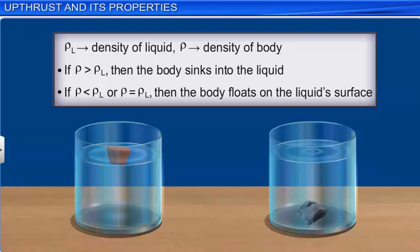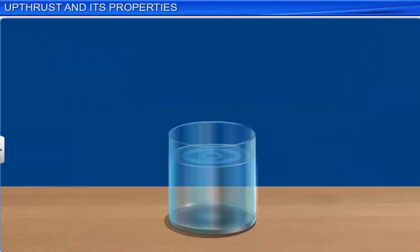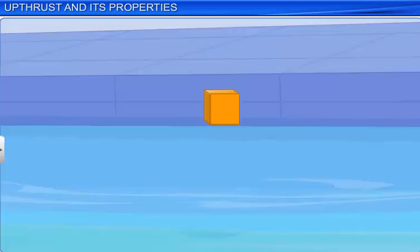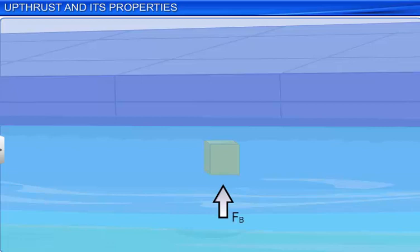Why do fluids exert an upthrust? When the pressure acting at a certain point in the liquid from all directions is equal, it causes an upthrust. When a block is immersed in a liquid, pressure acts on the lower part of the block, which is greater than that acting on the upper part. Thus, the difference in pressure between the two parts of the block causes the liquid to exert an upward force on the body — this is upthrust.